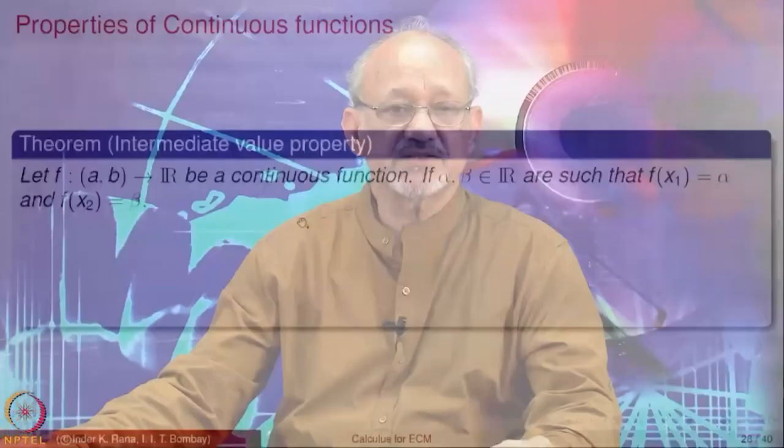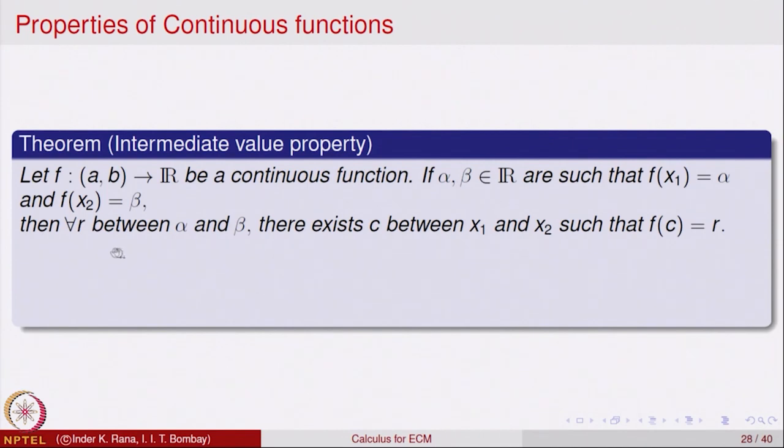We have seen some applications of continuity and will see more in lectures to come. Continuous functions have some very special properties. The first is called the Intermediate Value Property. It states: if f is a continuous function from an interval [a, b] to ℝ, and f(x₁) = α and f(x₂) = β, then for every r between α and β, there is a c such that f(c) = r.